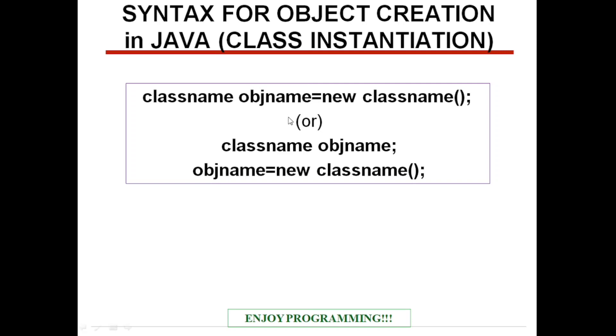The same syntax we can write in two statements. The first one, the declaration alone, later on assignment. Class name space, object name semicolon. We are creating the reference variable here. Here actually, the object is not created. Only the reference is created. When a reference will become an object means only when it is initialized. At this time only, this is becoming as an object.